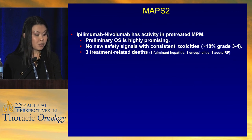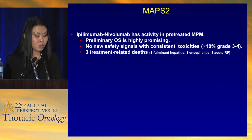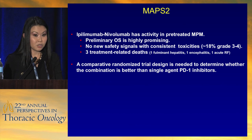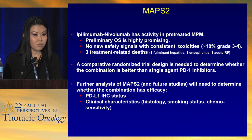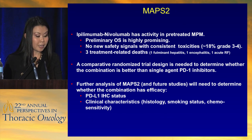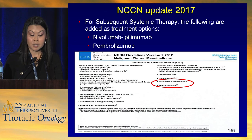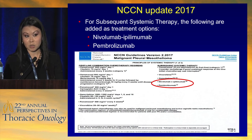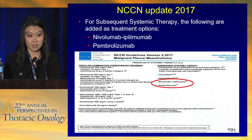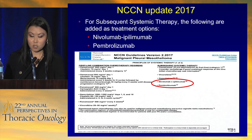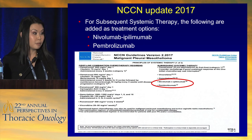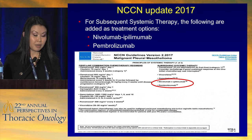Based on MAPS-2 data, the NCCN guidelines were amended to allow ipilimumab-nivolumab in the salvage setting, and pembrolizumab was also included. We don't yet have definitive survival data but OS looks promising for MAPS-2. A randomized trial is reportedly under development in France. We still don't know if benefit correlates with PDL1 IHC status, but the frontline ipilimumab-nivolumab versus chemotherapy trial should help clarify that. IPI-NEVO and pembrolizumab are now covered by insurance under the NCCN guidelines for salvage mesothelioma, with some prior authorization required.